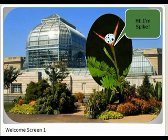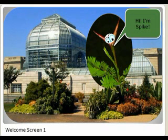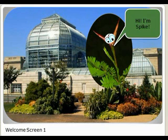Students will be prompted by a character to walk them through this program. Spike is the plant that's going to be walking them through the Botanic Garden. He not only explains what they're going to be doing today about plants, but also explains that he's a different type of plant, and their job today is to unlock the secret of how plants can be different from other plants yet still be successful plants.